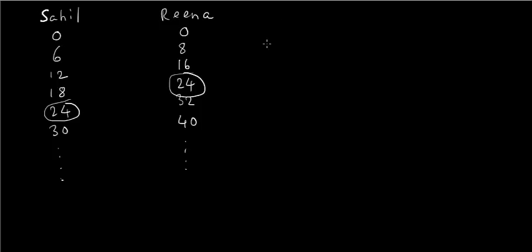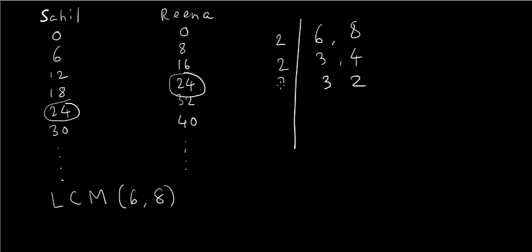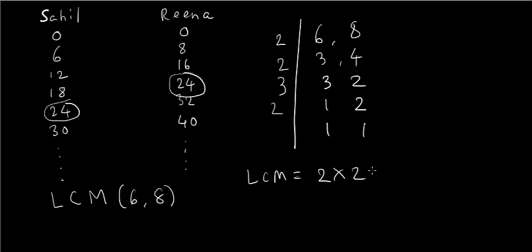Another way to solve this is to find the least common multiple of 6 and 8. Calculating the LCM of 6 and 8: the LCM is 2 × 2 × 3 × 2, which is 24.